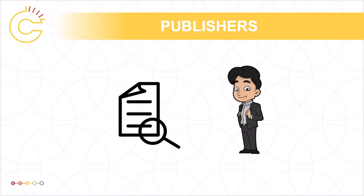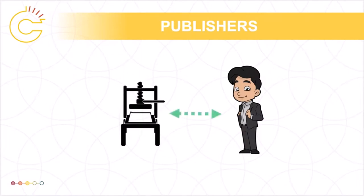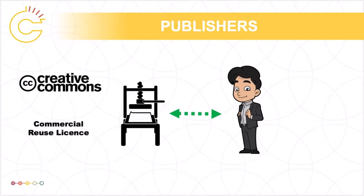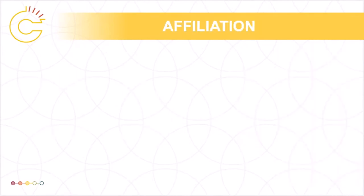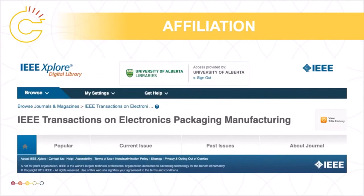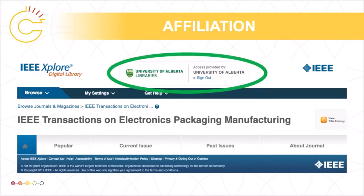Unlike the Creative Commons licenses mentioned earlier, these licenses are only between the publisher and one single, specified user. To complicate things, many academic articles have both a Creative Commons license to cover some types of reuse, often non-commercial uses, and the ability to obtain a secondary license that allows for other types of reuse. To explore these options for an academic article, look for the Reprints and Permissions link, usually located near the top or the bottom of the article. In some cases, you might also be affiliated with an institution that has purchased access to materials made available online, including databases or journals accessible through your public or academic library. Learn about the terms of use for these materials before you copy, share, or modify them.